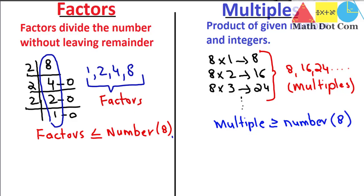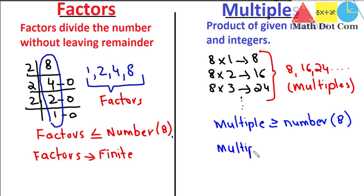Another important difference: factors are finite in number. As shown above, eight has exactly four factors — one, two, four, and eight. But multiples are infinite. If asked to find the multiples of eight, you cannot say there are only two or three or four; the multiples of eight go on forever.